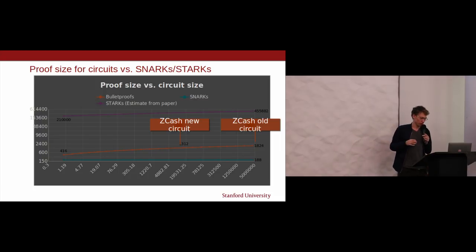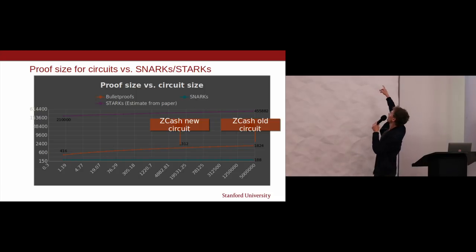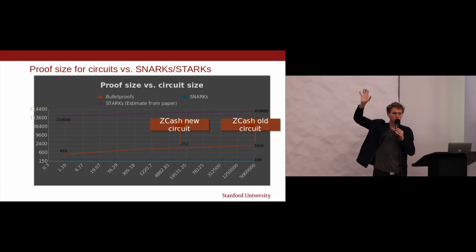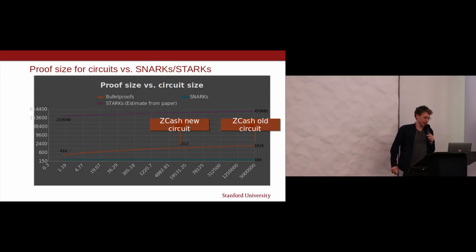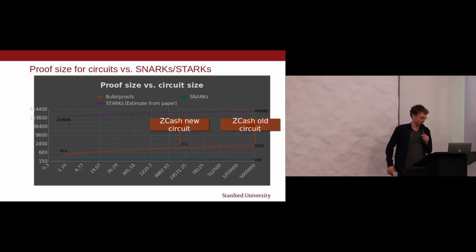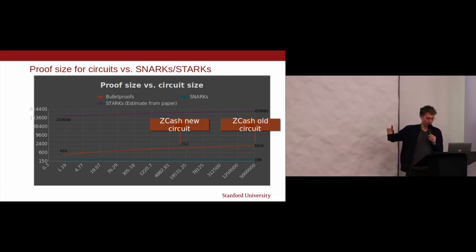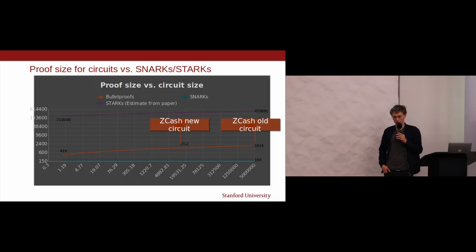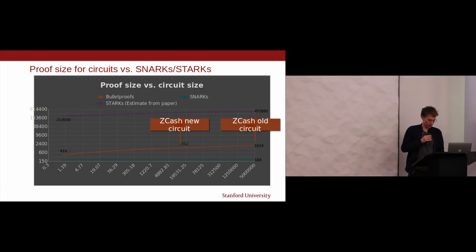For a comparison of proof systems: Sigma protocols are classical, simple, and have no trusted setup but have long proof sizes. Bulletproofs clearly improves on them with shorter proof sizes. SNARKs are excellent in verifier efficiency and proof size but have a trusted setup, expensive prover, and stronger cryptographic assumptions. STARKs have no trusted setup and asymptotically efficient verification, but start at 200 kilobytes proof size and the prover is almost prohibitively expensive. Bulletproofs add a different set of tradeoffs — no trusted setup, short proofs, and reasonably efficient verification.